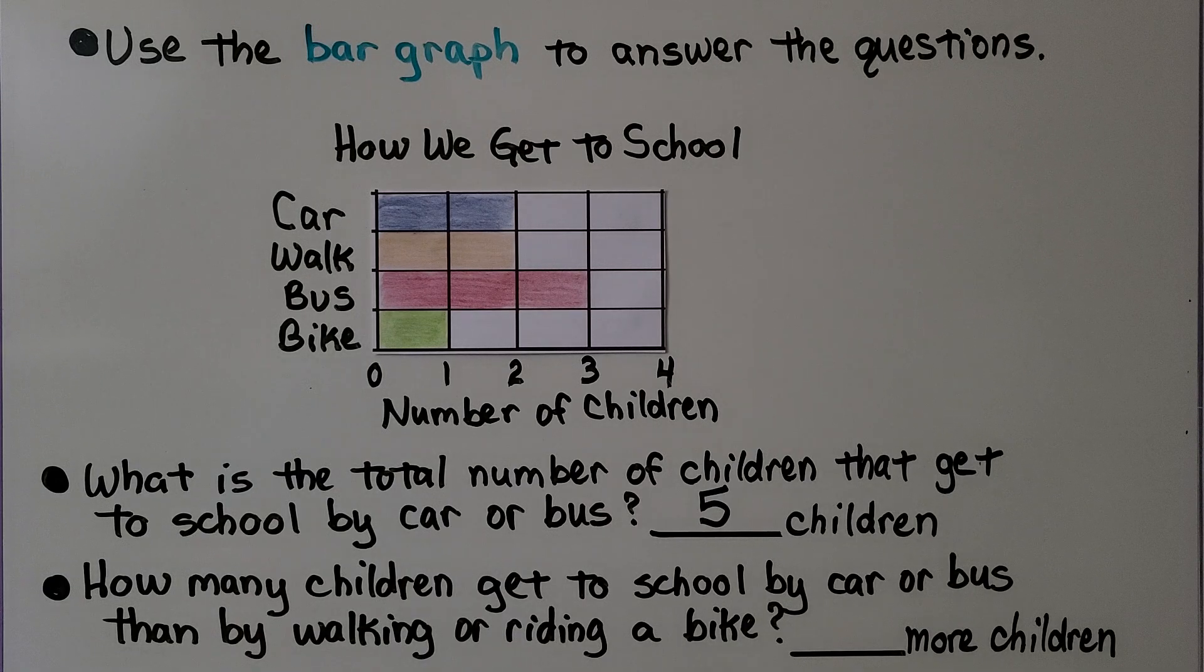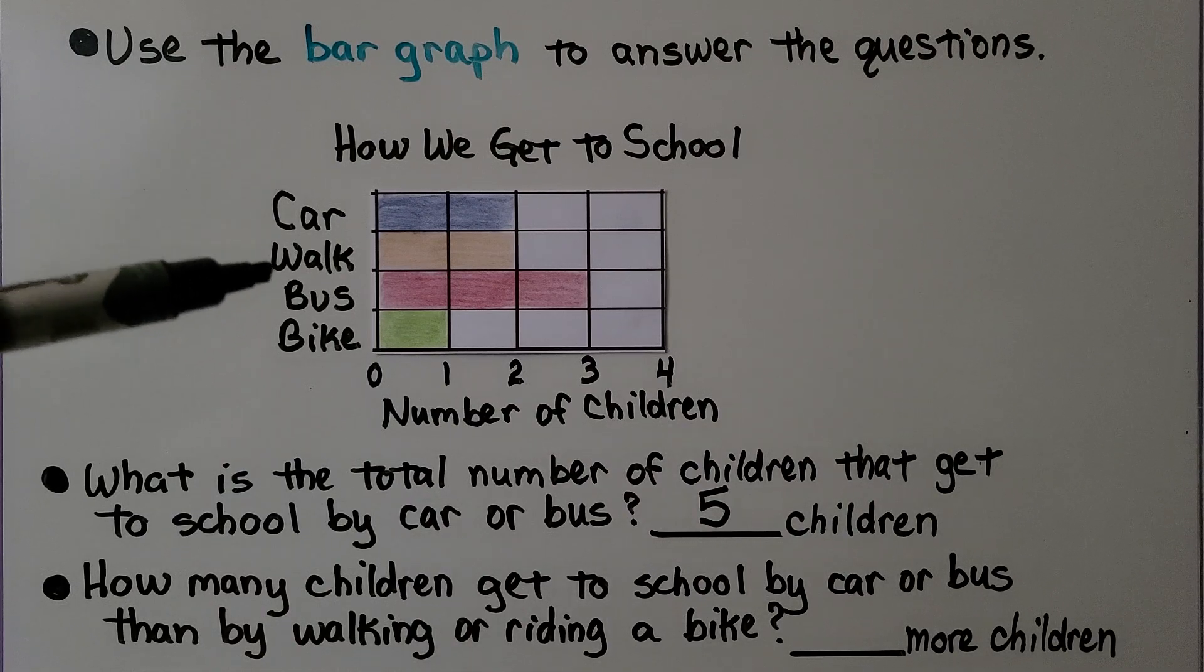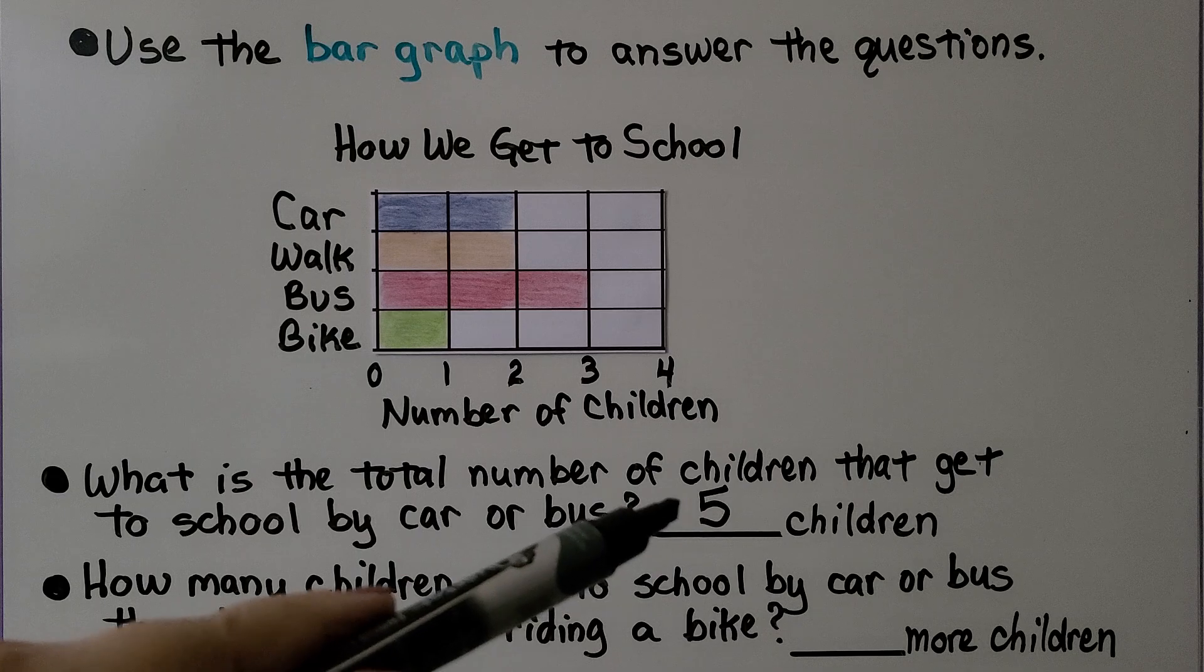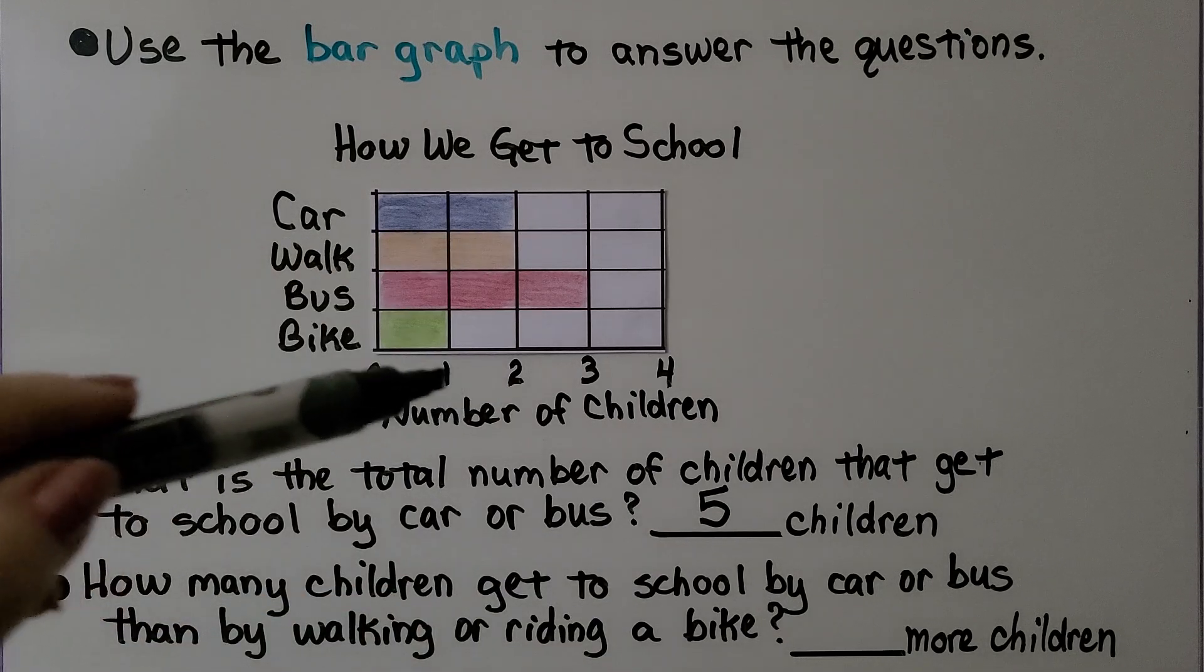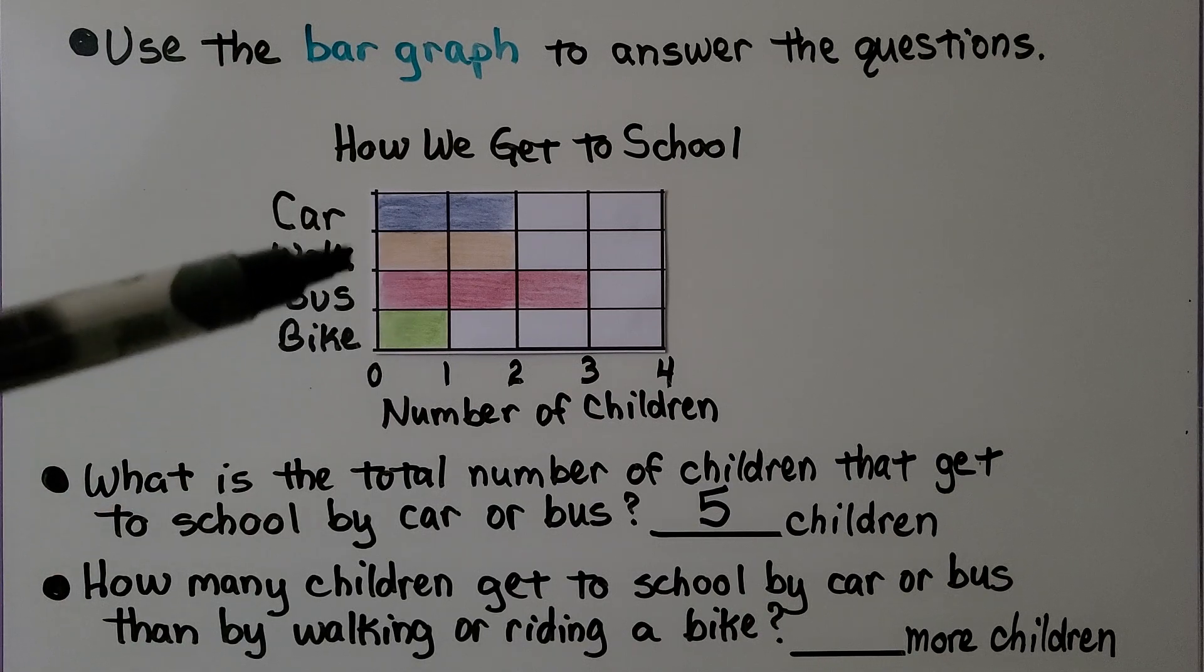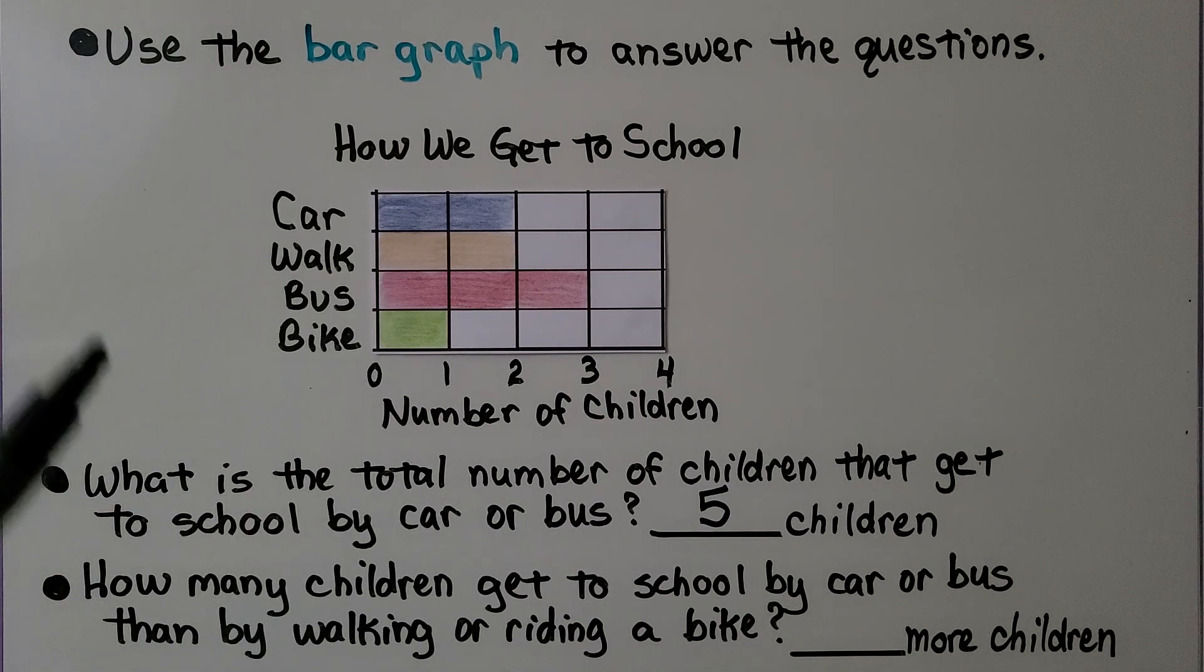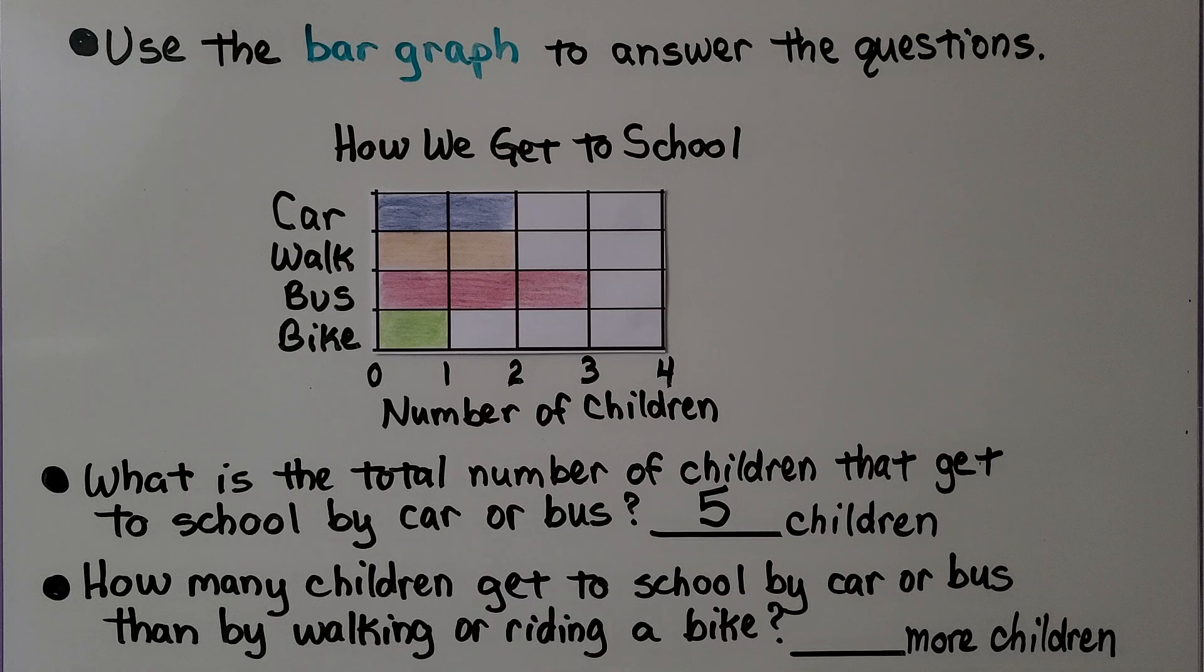This one says how many children get to school by car or bus than by walking or riding a bike. So now we're comparing car and bus, which is five, to walk and bike. And walk is two, bike is one. Two plus one is three when we add them together. That means we're comparing a five and a three.